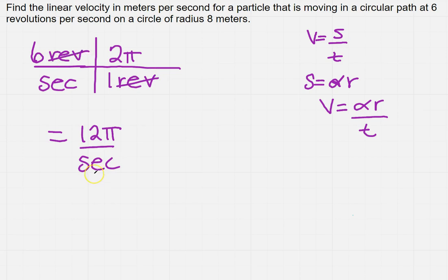Now so far so good. So that's given me what? Well, I've done time, there was my seconds. I've got alpha, now I need to multiply by the radius, that's the only thing I haven't used. So I'm going to multiply that by 8 meters.